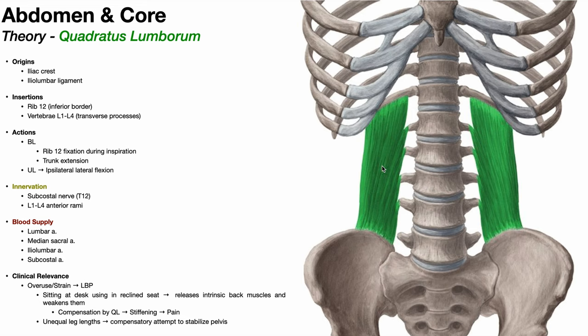Another action not mentioned here is the hip hike. If you stand up and hike your left hip up, that involves contraction of the left quadratus lumborum — so ipsilateral hip hiking when standing. You can technically do that in sitting as well, although generally hip hiking occurs in standing as a gait compensation. There are also reasons you might want to strengthen that movement, especially if a person has a pelvic drop on one side.